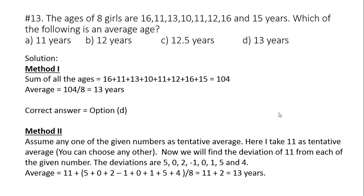Now the correct average will be given as tentative average that is 11 plus sum of all the deviations 5, 0, 2, minus 1, 0, 1, 5 and 4 divided by number of girls, 8. So the answer is 11 plus 2 equals to 13 years.